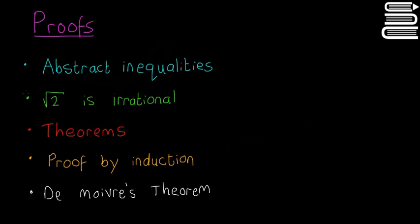There are a few different topics we're going to look at. First, abstract inequalities, then the proof that the square root of two is irrational, then theorems - there are three geometry theorems we need to know. We also need to know how to prove things by induction.